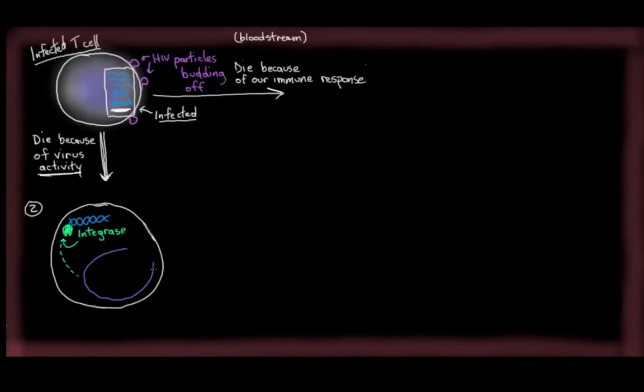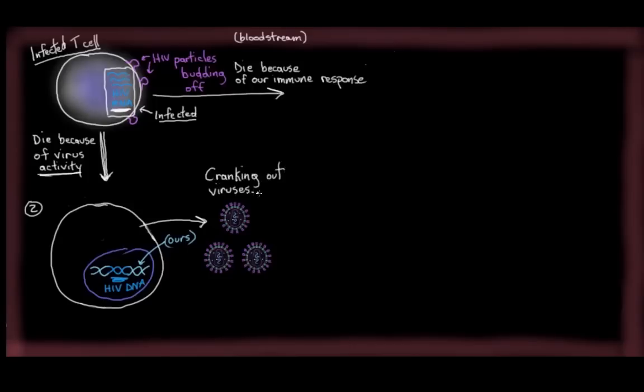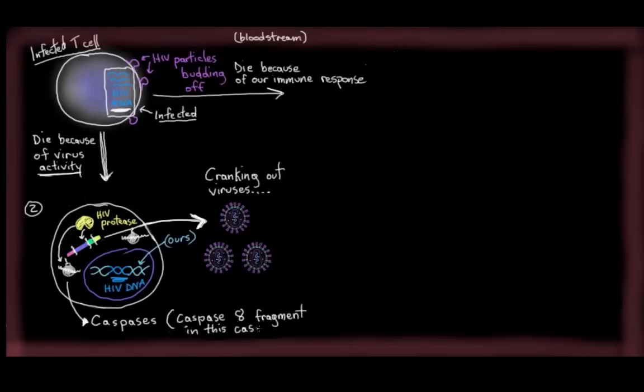And finally, another thing that might happen is that, let's say integrase actually does get the job done, and the viral DNA ends up integrated into our DNA. Well, at that point, we might start cranking out copies of virus. And remember that one of the last steps in creating viable HIV virus is that this viral protein, HIV protease, has to cleave up the viral precursors that have been made in our cell in order to activate them and to make them all infectious-y. So, what happens, I guess, as a byproduct of that, is that the HIV protease also will cleave up and activate other proteins in our cell called caspases, specifically a fragment of caspase number eight. There's lots of different kinds of caspases, but this one activates number eight.